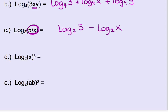Example D involves a power, which is the third property. We bring that exponent 5 down in front, giving us 5 times logarithm base 2 of x.